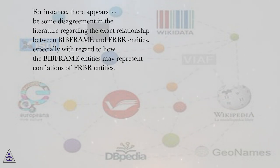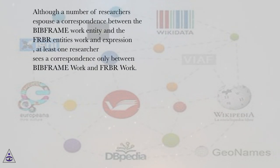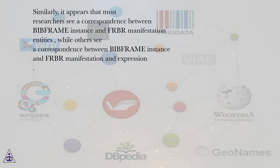For instance, there appears to be some disagreement in the literature regarding the exact relationship between BIBFRAME and FRBR entities, especially with regard to how the BIBFRAME entities may represent conflations of FRBR entities. Although a number of researchers espouse a correspondence between the BIBFRAME work entity and the FRBR entities work and expression, at least one researcher sees a correspondence only between BIBFRAME work and FRBR work. Similarly, it appears that most researchers see a correspondence between BIBFRAME instance and FRBR manifestation entities, while others see a correspondence between BIBFRAME instance and FRBR manifestation and expression.